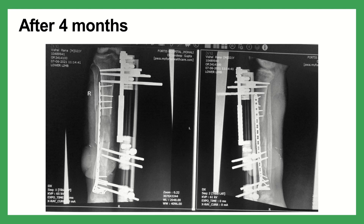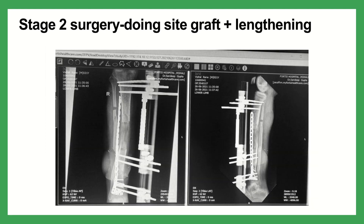At this point, the patient was taken up for a second-stage surgery. The docking site was bone grafted with pure cancellous bone, and the proximal screws were loosened to continue distraction to achieve the requisite limb length and cover up the tibial shortening.